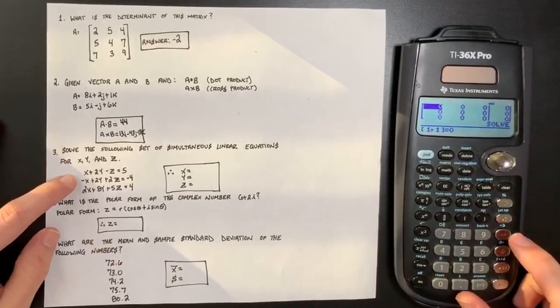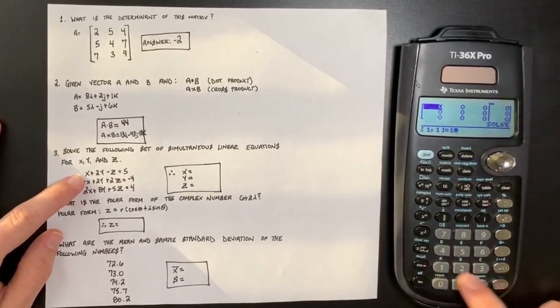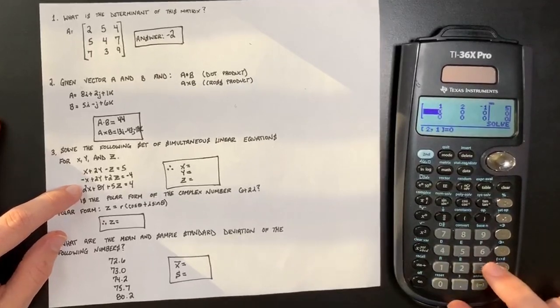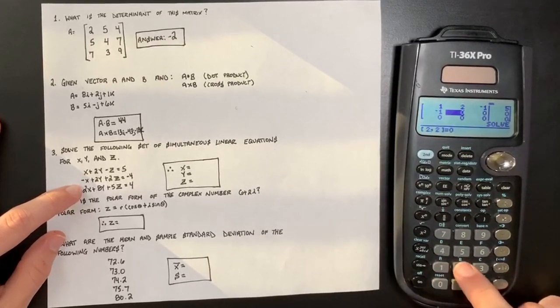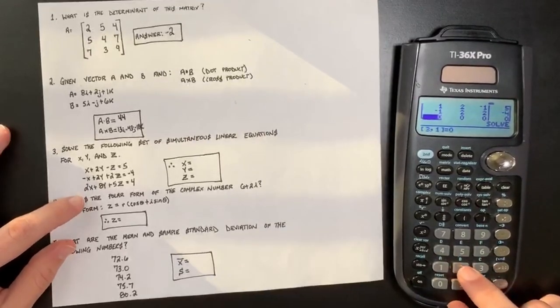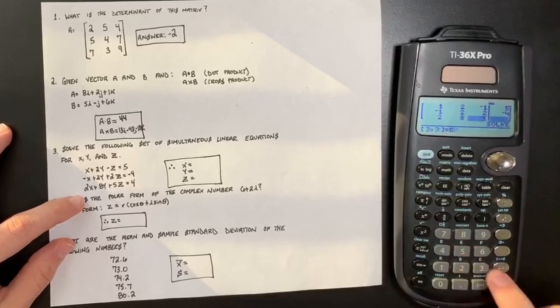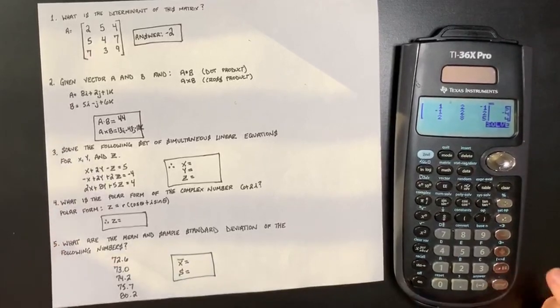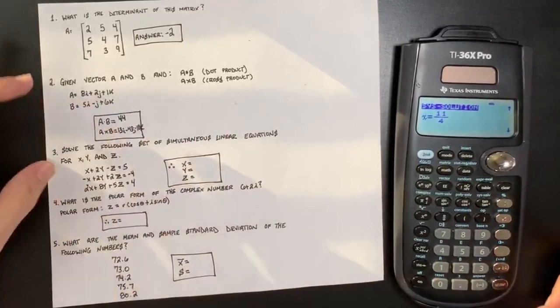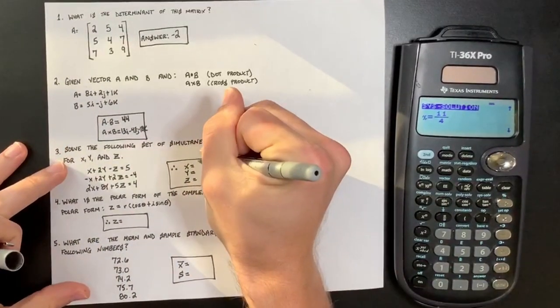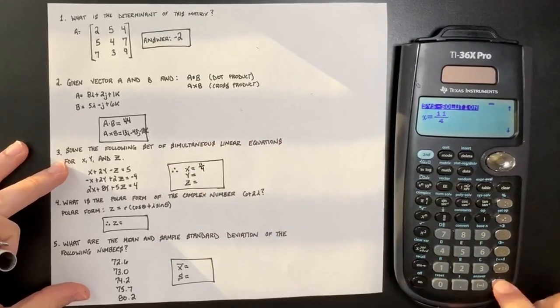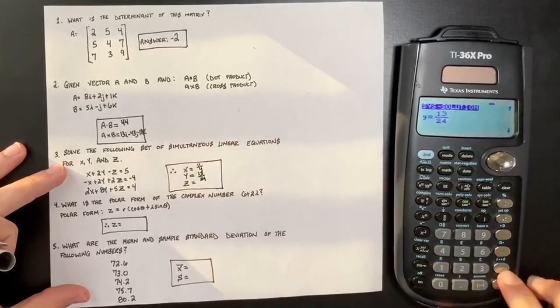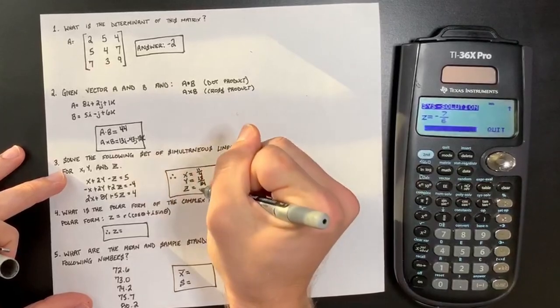So you look at the coefficients for this problem, and if we're looking at the first equation, it's one, two, negative one, five. Second row, or second equation, negative one, two, two, negative four. Third equation, two, eight, five, and four. Okay, so now we've just inputted these system of equations, and we just hit solve. And it tells you, x is 11 over four. No extra step, just plugging it in and writing down the solution. y, 13 over 24, and z, negative seven over six.